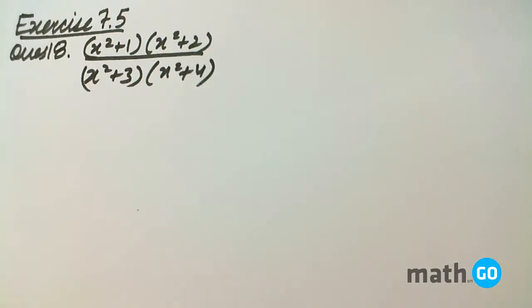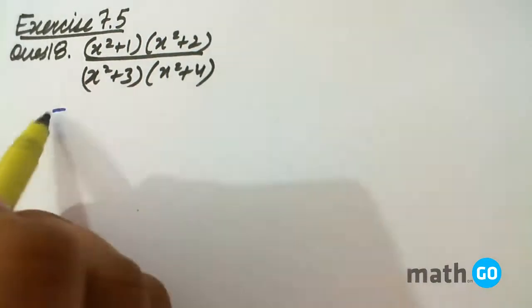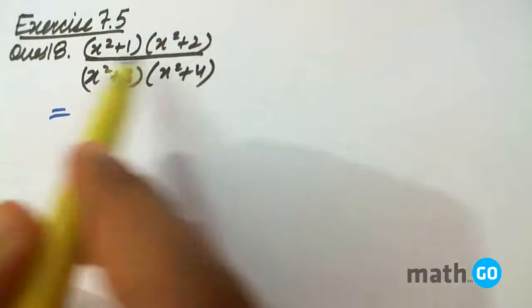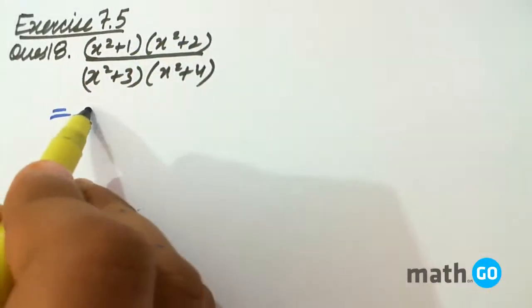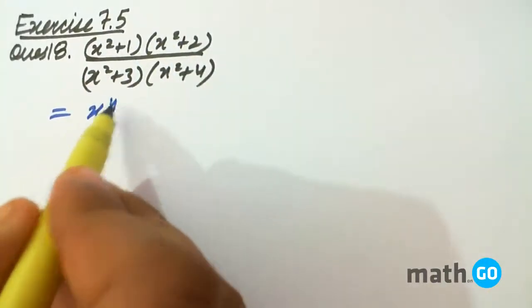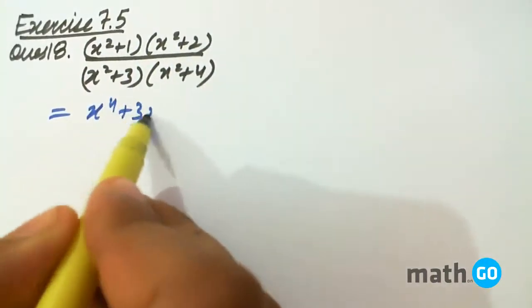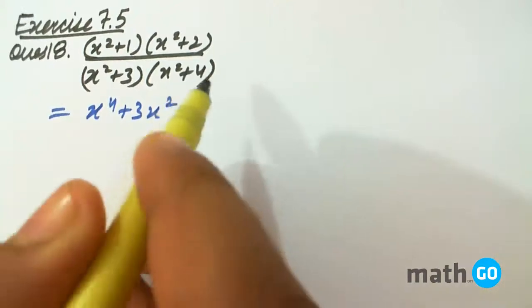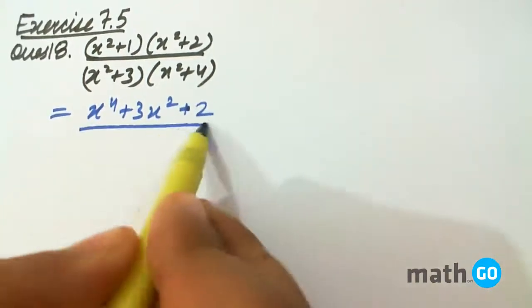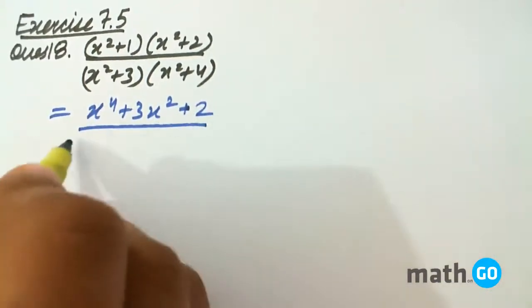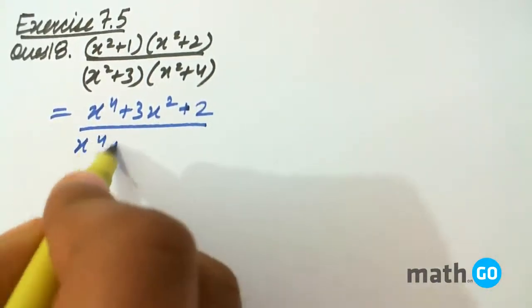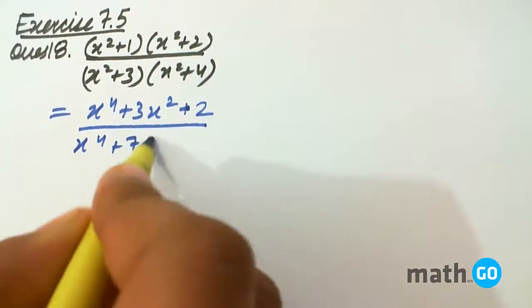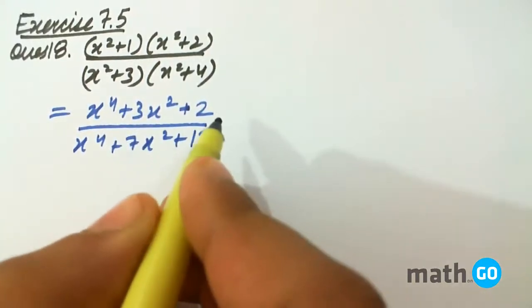Exercise 7.5, question number 18. First of all, we open the brackets to get x to the power 4 plus 3x squared plus 2 upon x to the power 4 plus 7x squared plus 12.